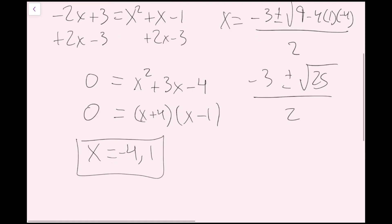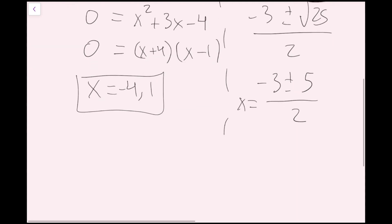The square root of 25 is 5. So I get negative 3 plus or minus 5 over 2. If I do negative 3 minus 5, that's negative 8 divided by 2 equals negative 4. If I do negative 3 plus 5, that's positive 2 divided by 2 equals 1. Both methods give the same answer, confirming we're correct.